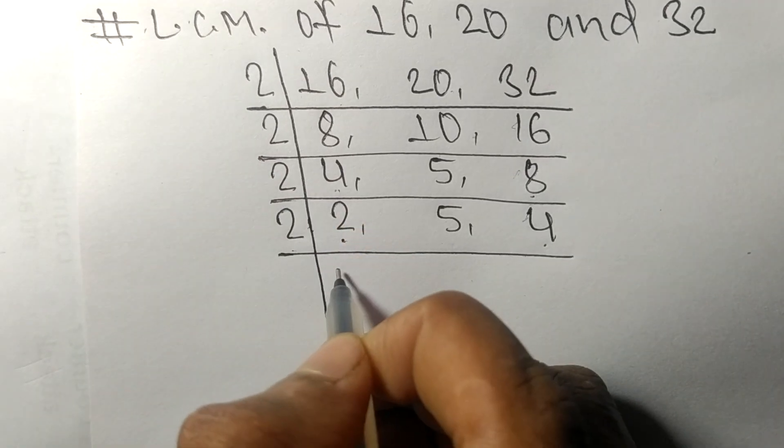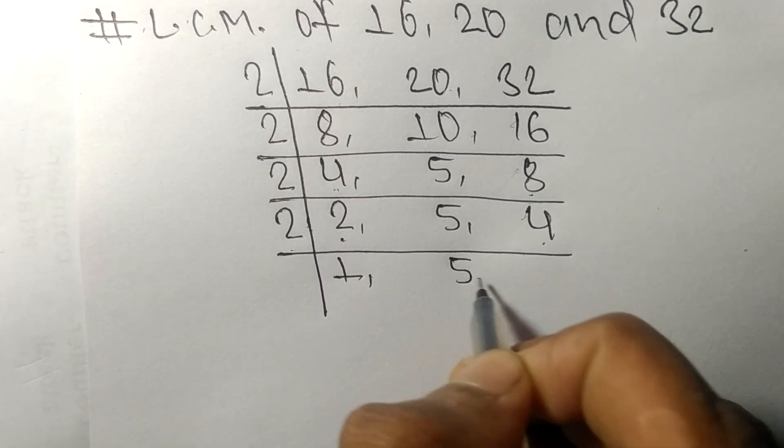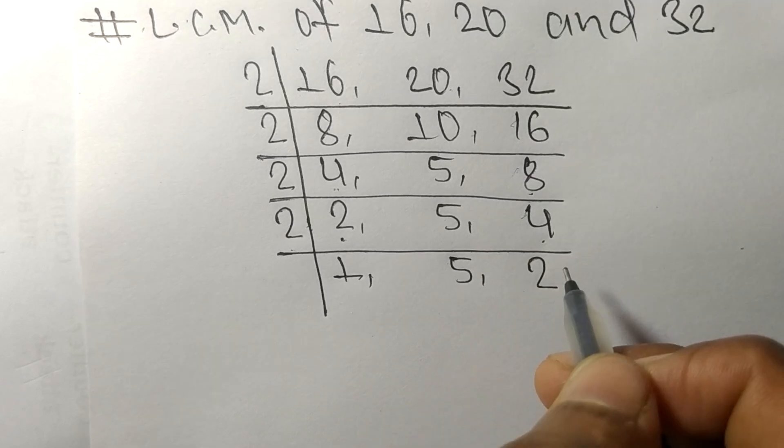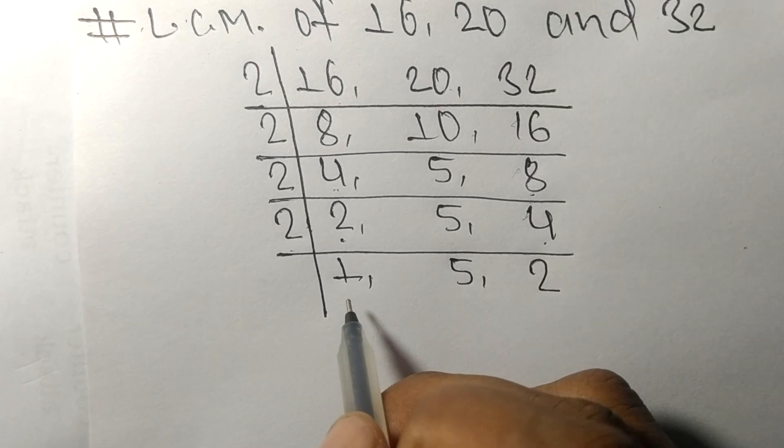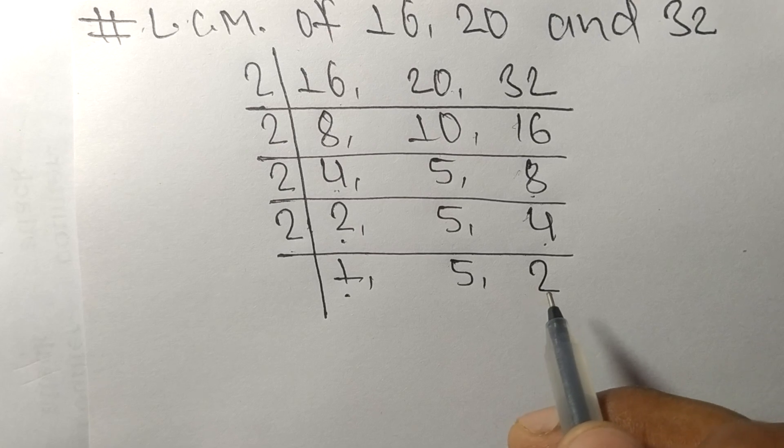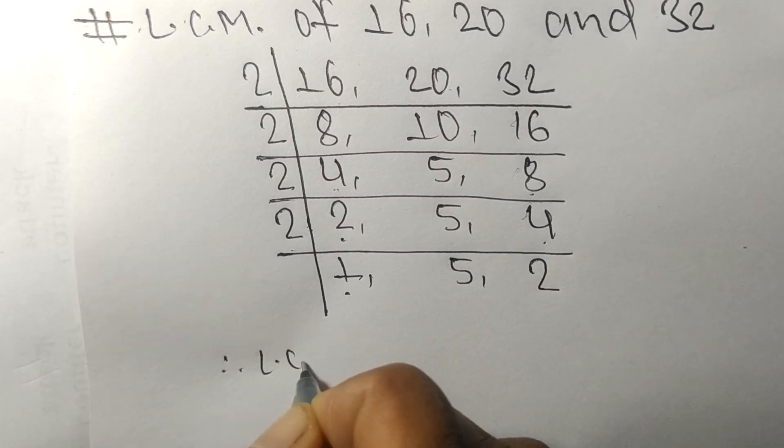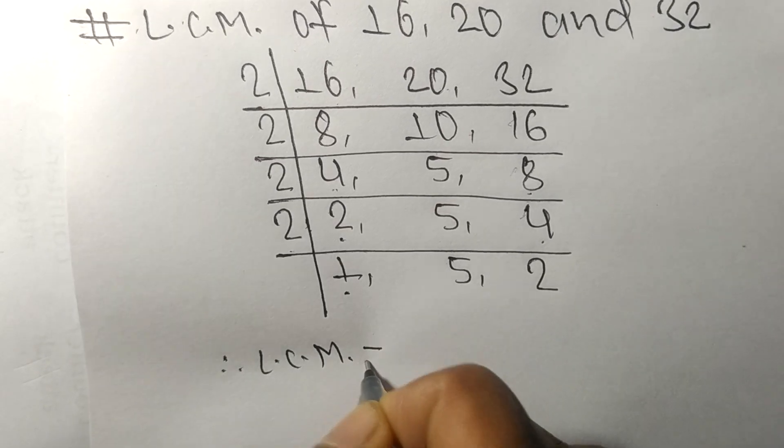2 times 1 means 2, 5 is not divisible so it stays the same, 2 times 2. So now we got 1, 5, and 2, which are not exactly divisible by the same number. Therefore, its LCM is equal to...